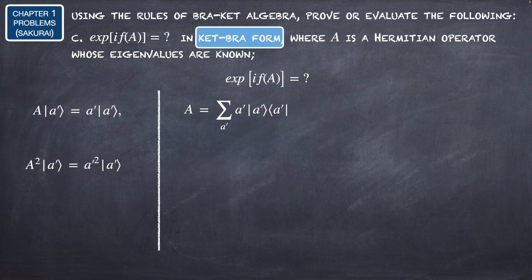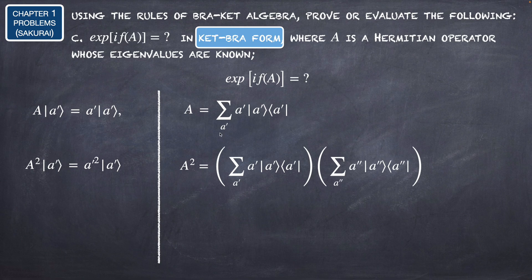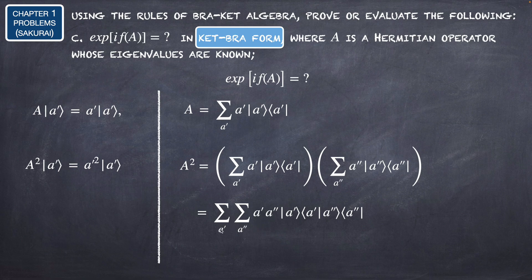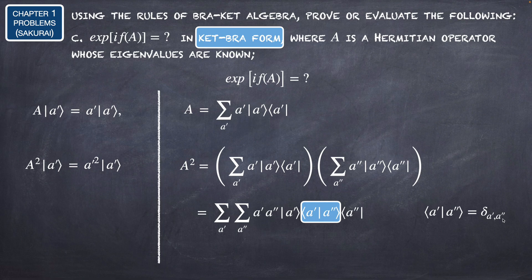This is straightforward. Now we obtain the form of A² by multiplying the ket-bra sum by itself, using two summation indices a' and a''. This gives a double summation with the inner product ⟨a'|a''⟩, which is the Kronecker delta δ(a', a''). Since this is an orthonormal basis, the Kronecker delta is one when a'' = a' and zero otherwise. The result is a summation over a' of a'² times the projection operator |a'⟩⟨a'|.